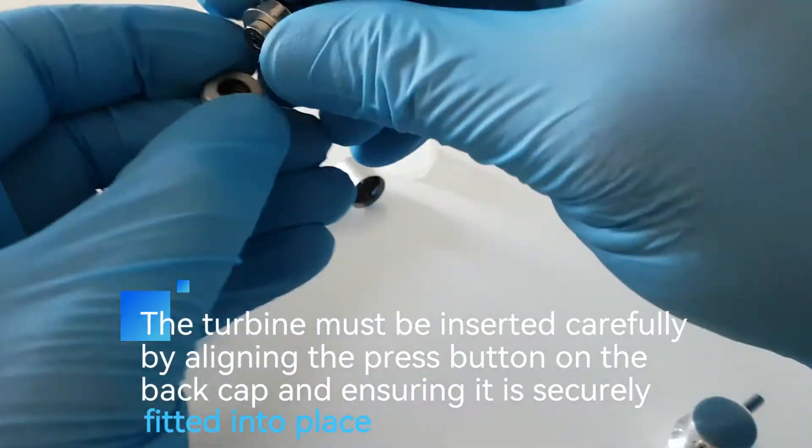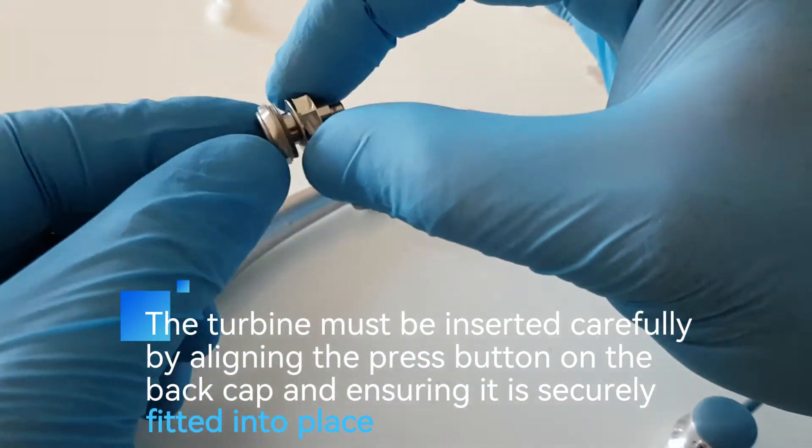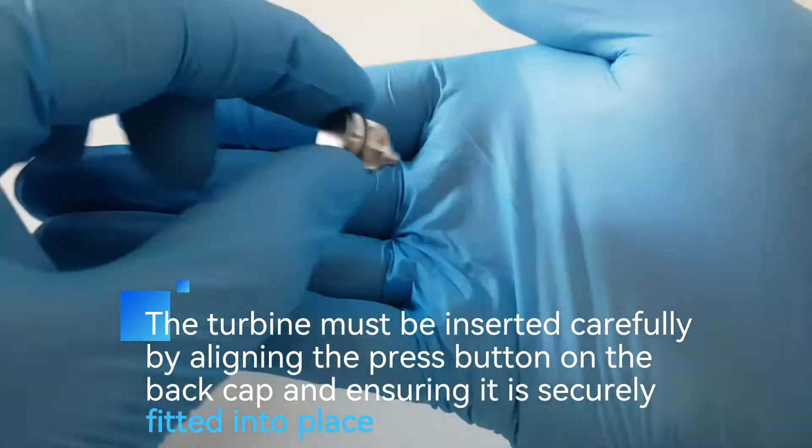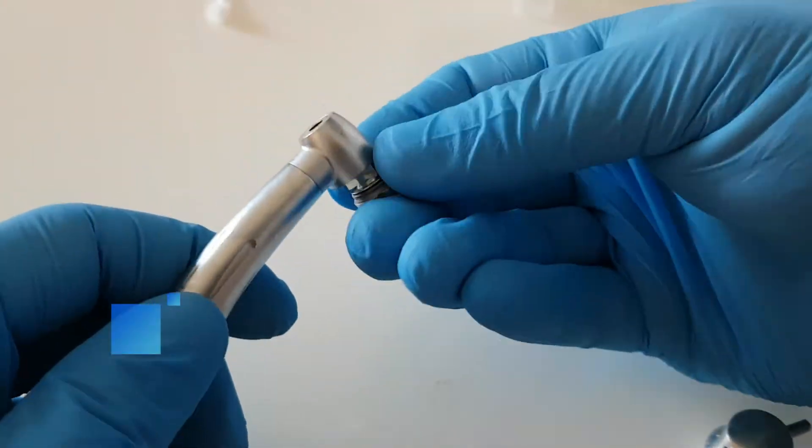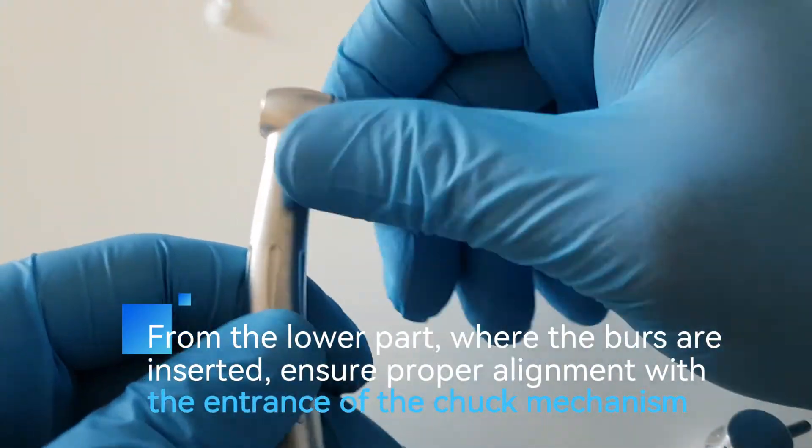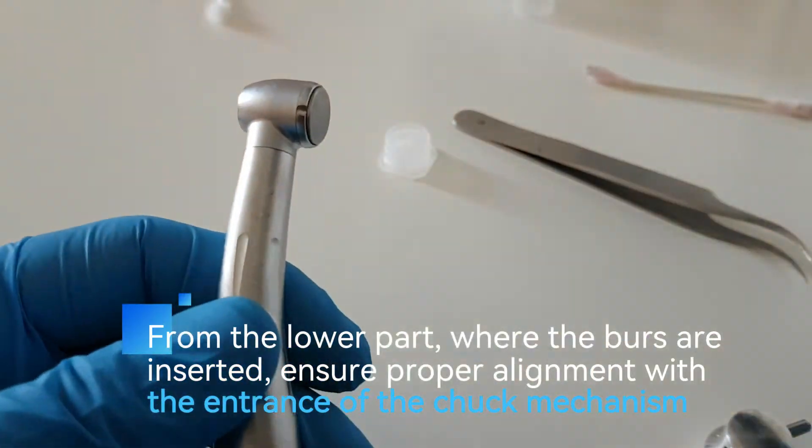The turbine must be inserted carefully by aligning the press button on the back cap and ensuring it is securely fitted into place. From the lower part where the burrs are inserted, ensure proper alignment with the entrance of the chuck mechanism.